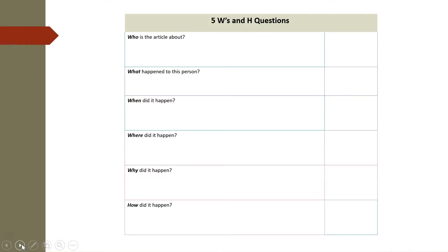As we read, we will consider the questions in this chart, known as the 5 W's and an H. This is in the Try It section of your packet. Keep these questions in mind as we read about Malala. We will be looking for the who, what, when, where, why, and how. Pay attention to the details in the article that contribute to your understanding of the text, as these details help to determine the central idea.